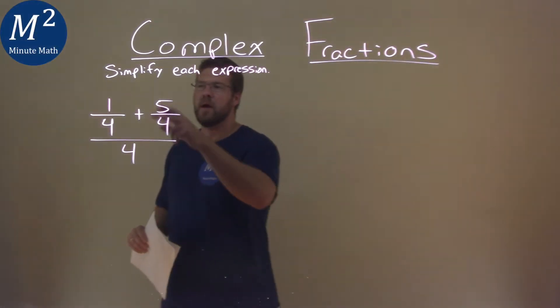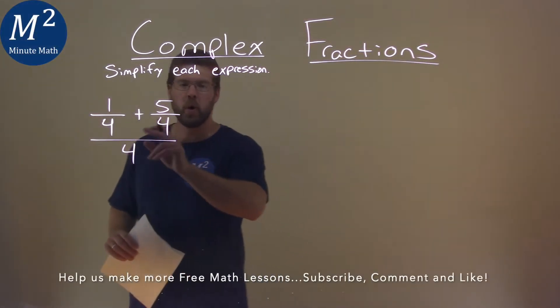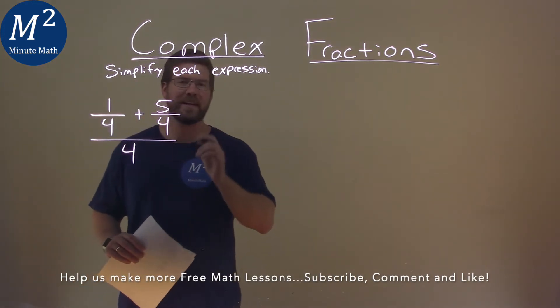We're given this problem right here: 1 fourth plus 5 fourths over 4, and we have to simplify this expression.